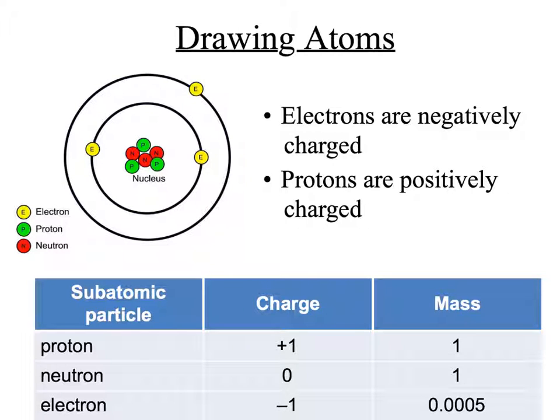When we draw atoms, we always draw the nucleus containing the neutrons and protons, and then the electrons arranged in shells, which I'll speak about in the other video about electronic structure. The electrons are negatively charged and the protons are positively charged.